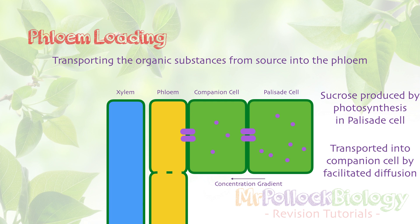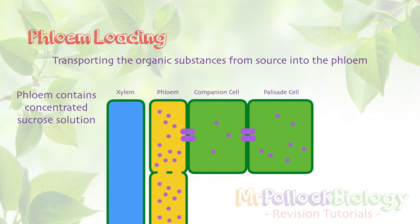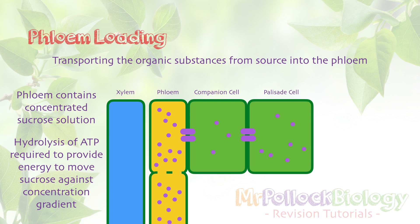But how do we get from the companion cell into the phloem? The problem is that the phloem is already fully loaded with concentrated sucrose solution, so there's no concentration gradient. We need to move the sucrose against its concentration gradient, which requires ATP. So we use a protein carrier and ATP to actively transport the sucrose into the phloem — though it's not quite straightforward active transport, as there is co-transport of protons involved. Loading sucrose into the phloem requires the hydrolysis of ATP.